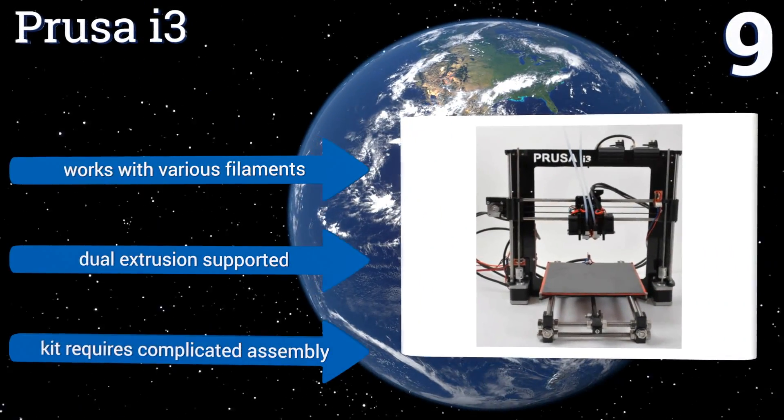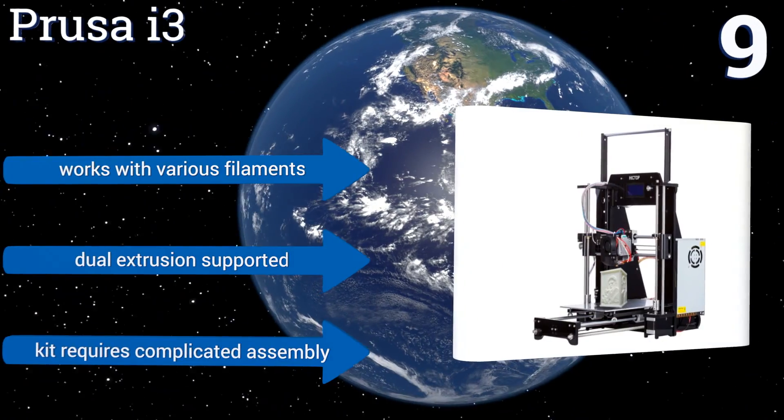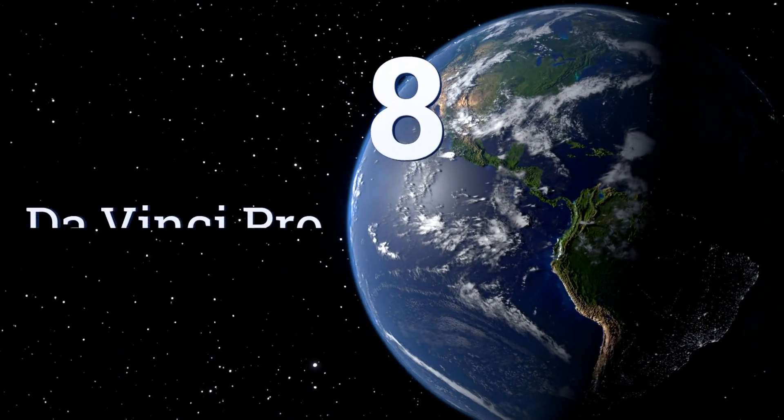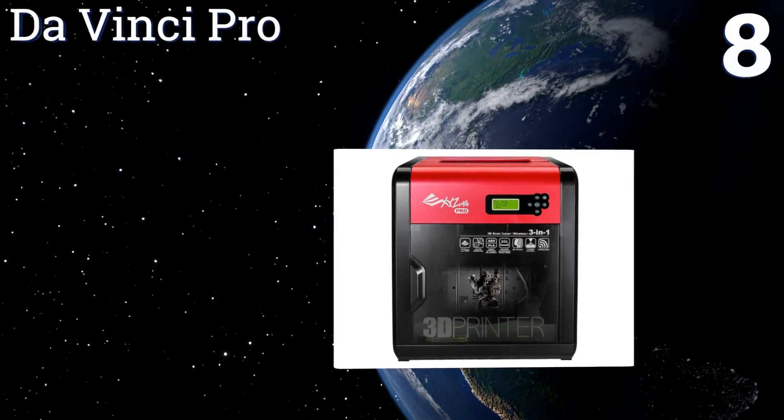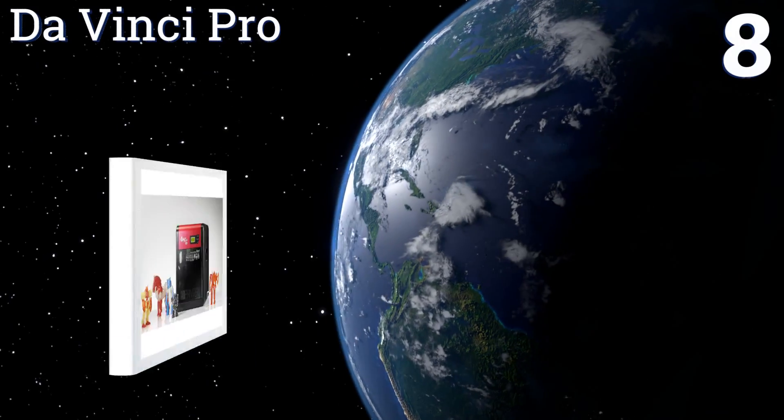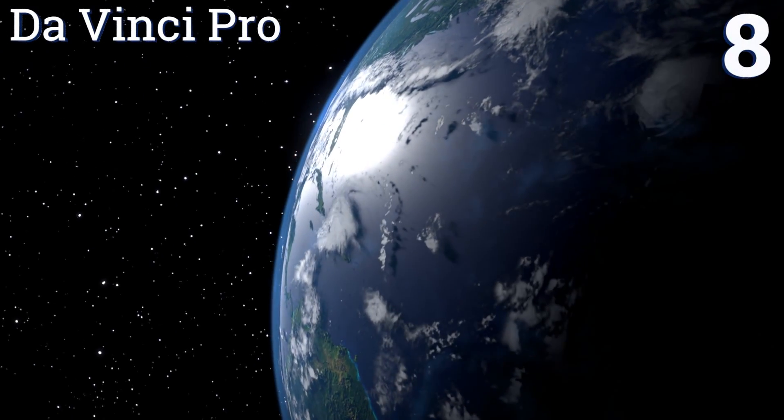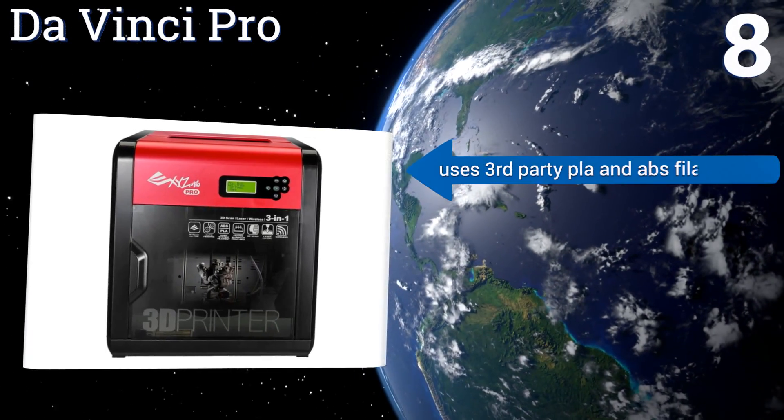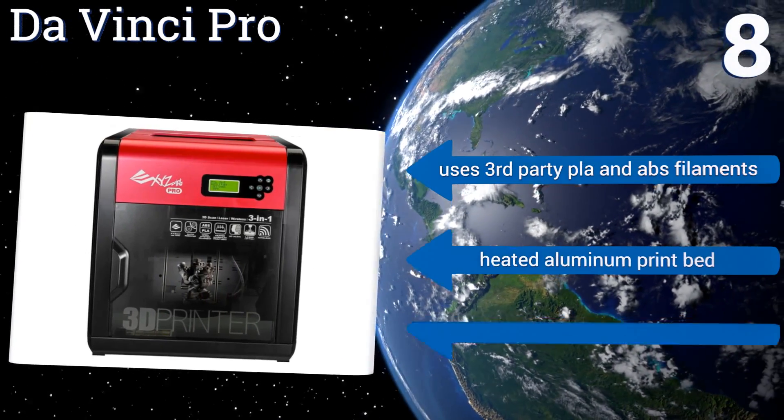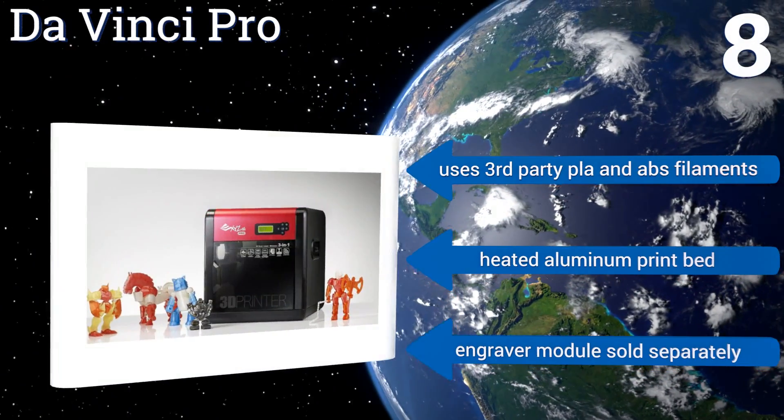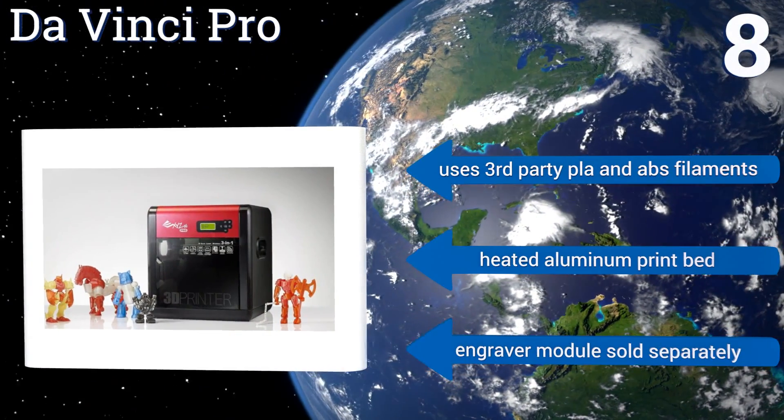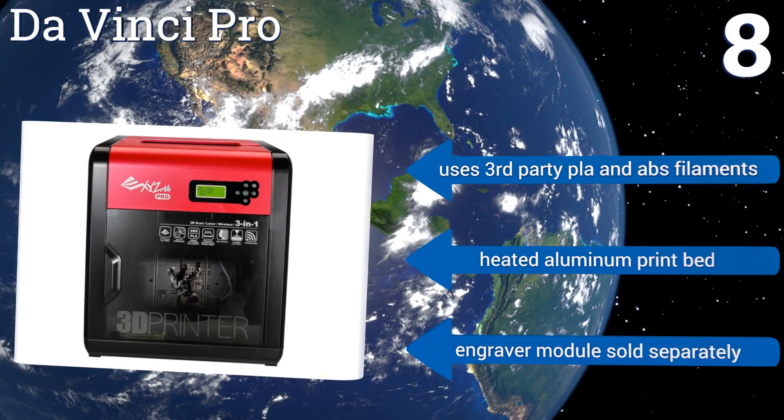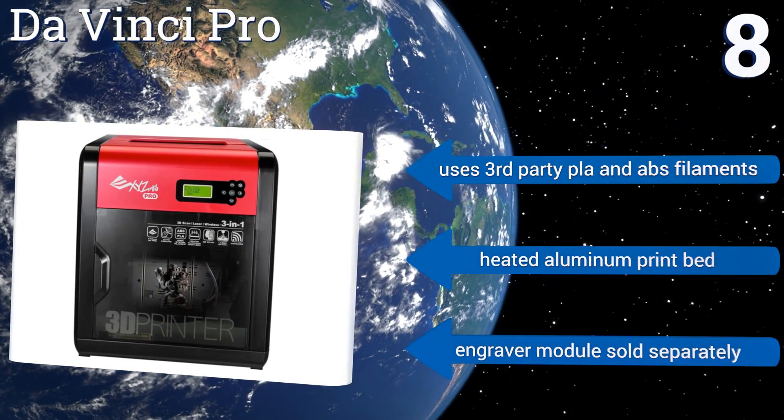Coming in at number eight on our list, although all-in-one desktop prototyping technology has a long way to go, XYZ Printing's da Vinci Pro bundles scanning, engraving, and reproduction capabilities into a single machine, offering a package solution that's accessible and affordable, albeit imperfect. It uses third-party PLA and ABS filaments and has a heated aluminum print bed. An engraver module is sold separately.